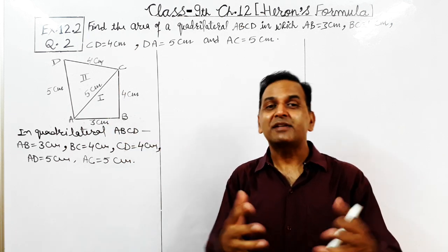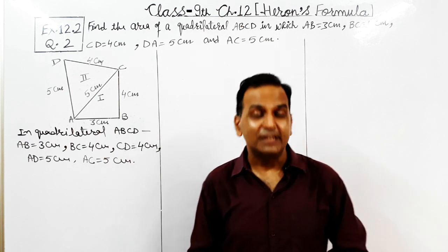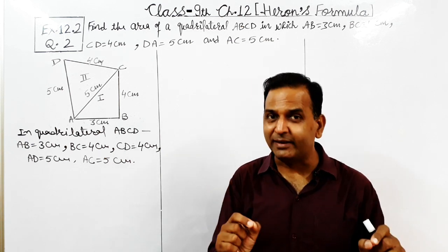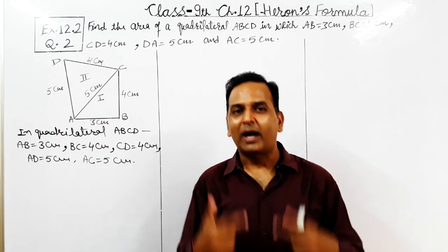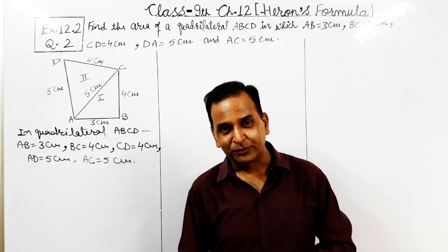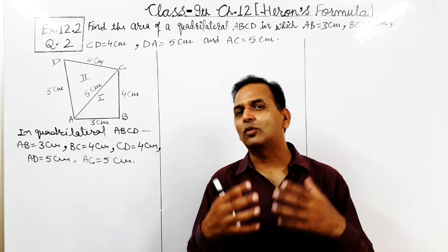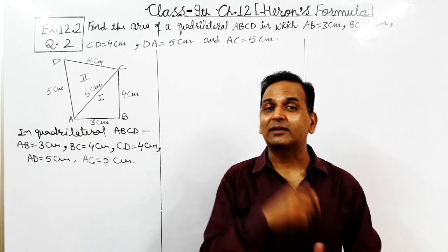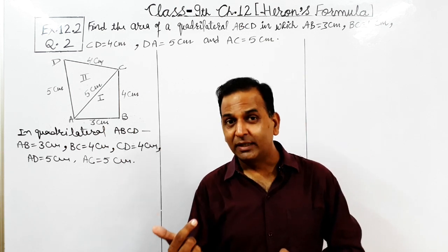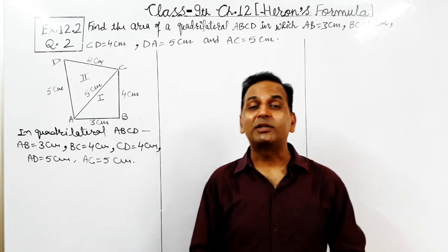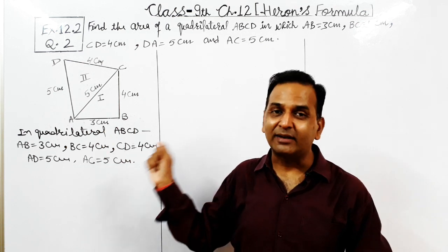Recall from class 8 what we studied about right angles related to Pythagorean triplets — how we can prove that given 3 numbers form a Pythagorean triplet or not. Just like Pythagoras' rule: if the square of the longest side is equal to the sum of the squares of the other two sides, then we can say it is a right-angled triangle.